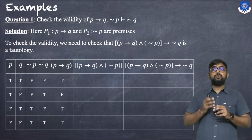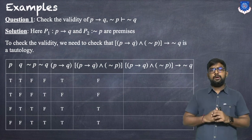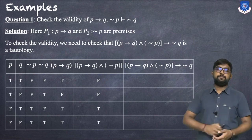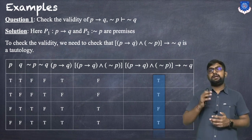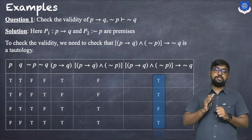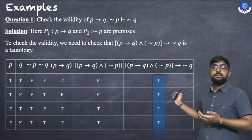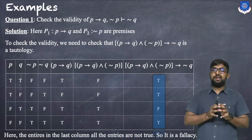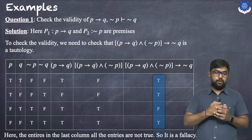For (p → q) ∧ ¬p, the values are F, F, T, F, and the final column gives T, T, F, T. For a tautology, all entries in the last column must be true. However, the third entry is F, so it is not a tautology. Therefore, the argument is not valid — it is a fallacy.